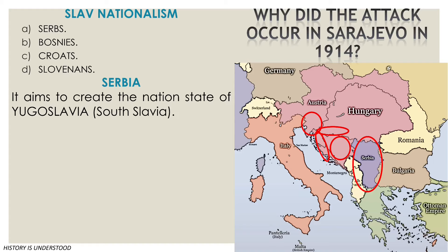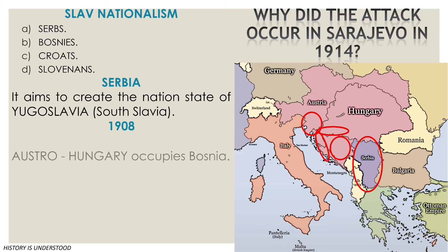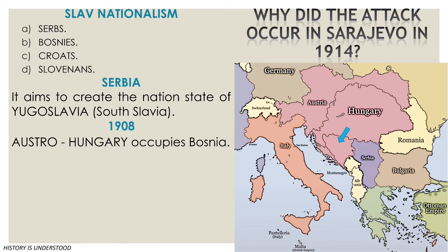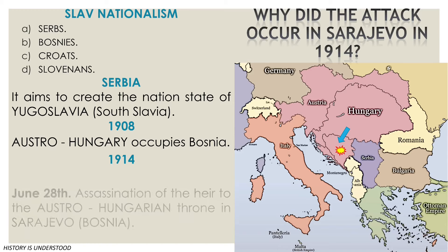However, the main enemy of Yugoslavia is the Austro-Hungarian Empire that controls all these territories and, even more, when it invades Bosnia in 1908. This will greatly anger the Slavic nationalists, who will have their chance to act in 1914, when the heir to the Austro-Hungarian throne visits the Bosnian capital, Sarajevo.